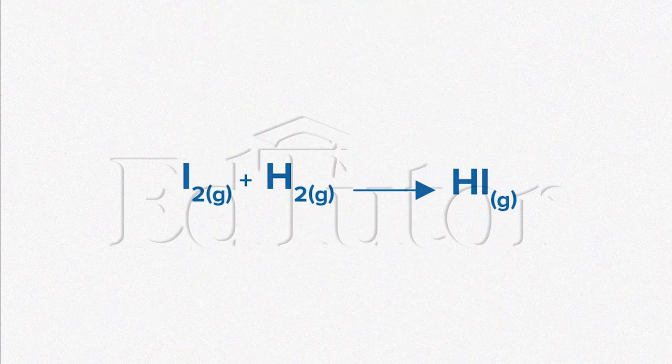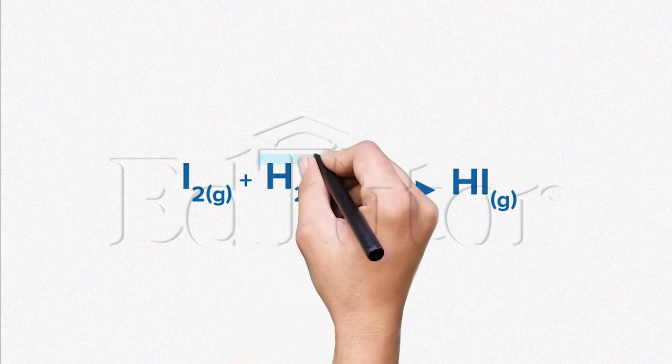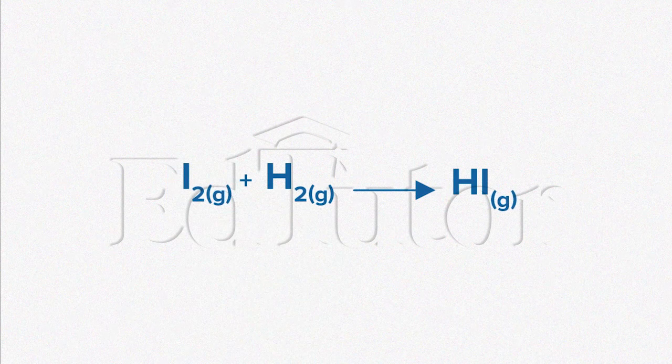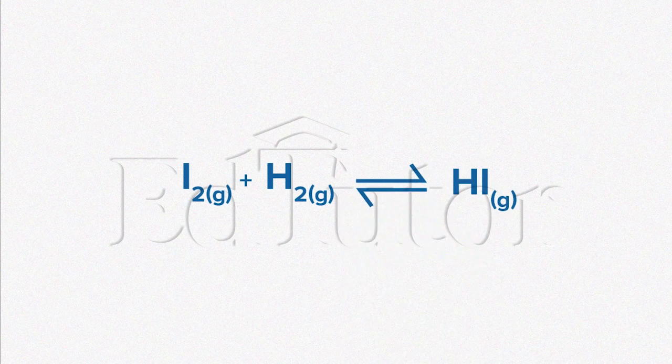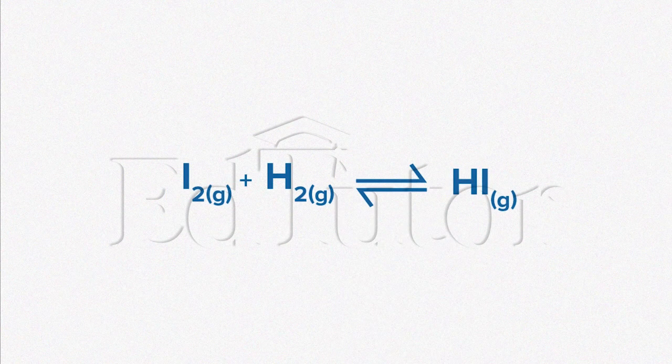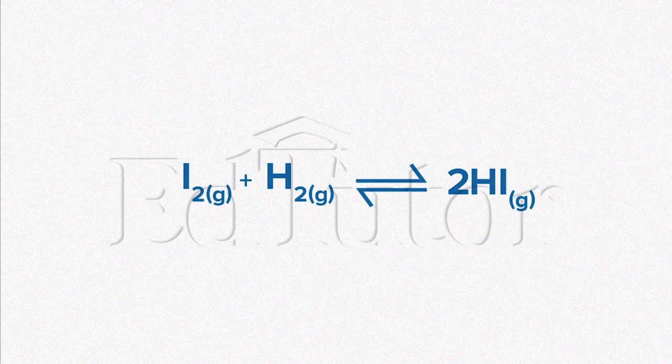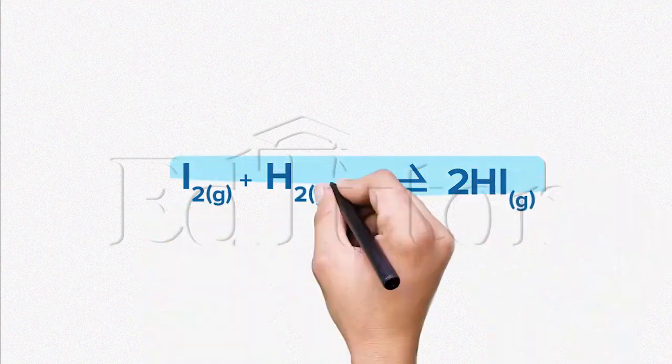Take a look at the screen. It can be written as hydrogen gas plus iodine gas. We will then place a double arrow. After the double arrow, we will write 2 moles of hydrogen iodide on the product side. Pretty simple, right? Just remember that the double arrow is what signifies that this is a reversible reaction.